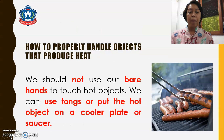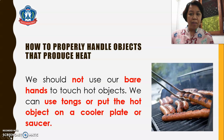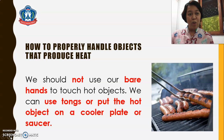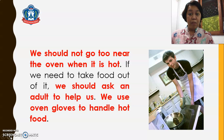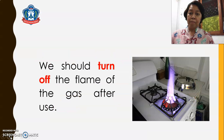How to properly handle objects that produce heat. We should not use our bare hands to touch hot objects. We can use tongs or put the hot object on a cooler plate or saucer. We should not go too near the oven when it is hot. If we need to take food out of it, we should ask an adult to help us. We should use oven gloves to handle hot food. And lastly, we should turn off the flame of the gas after use.